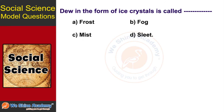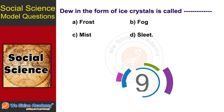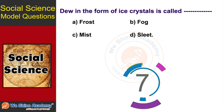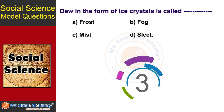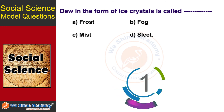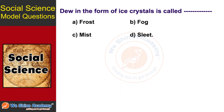The next question is: dew in the form of ice crystals is called dash. In 10 seconds, find the answer. The answer is Option A.